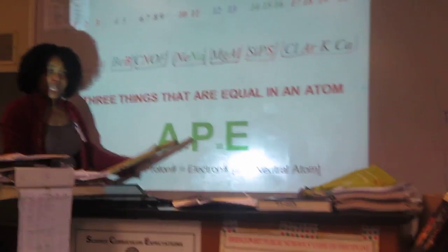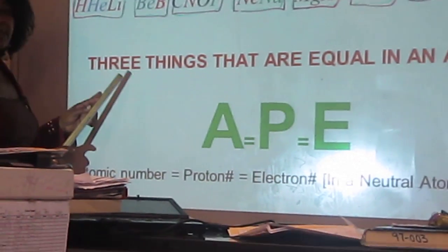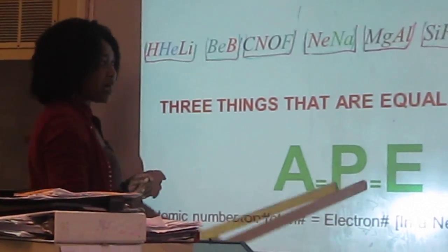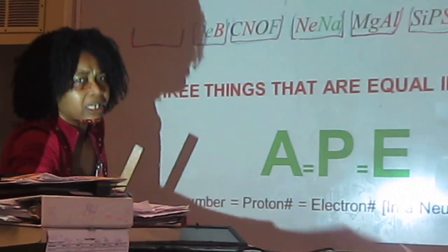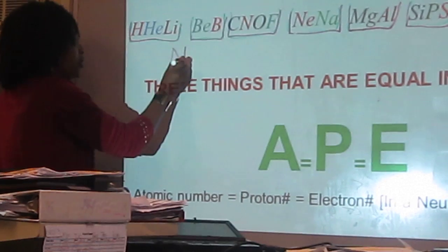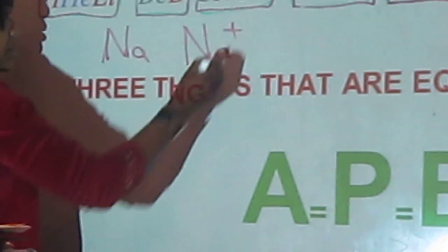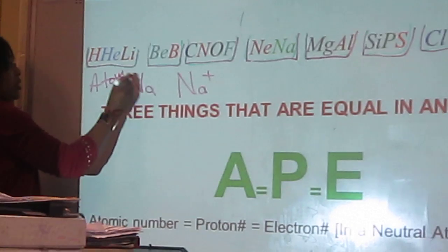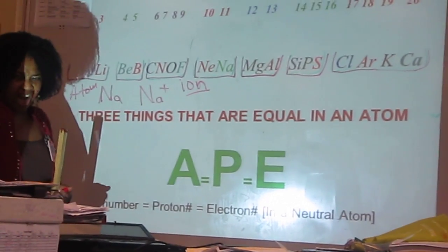So this is how I came up with this abbreviation, which represents something. Read this: the three things that are equal in the atom. In what type of atom? In a neutral atom. In a neutral atom, there is another. If this is sodium, Na, this is neutral sodium. Na+ is not. So if this is the atom, sodium atom, this is ion. Do you say the word? Ion. Ion. Ion.